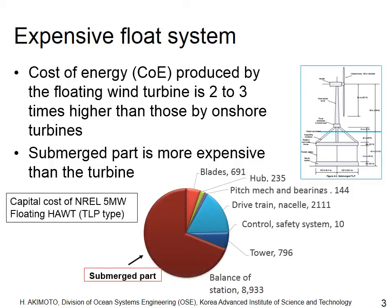This is an example of a cost breakdown of the tension leg platform type wind turbine. You can see two-thirds of the cost is for the submerged part, including the float and anchoring system.